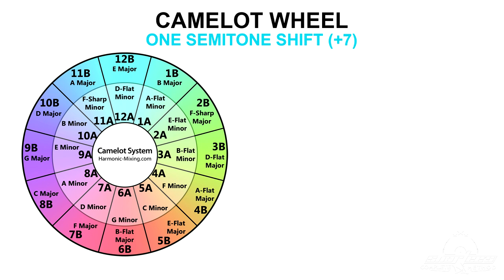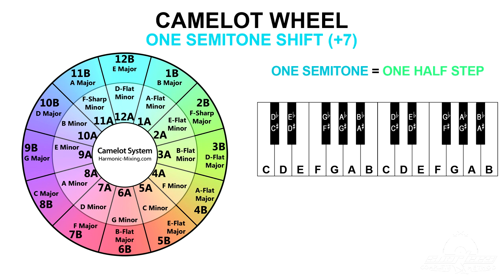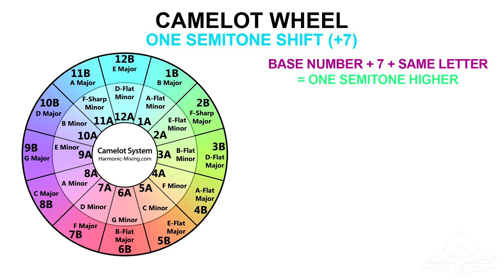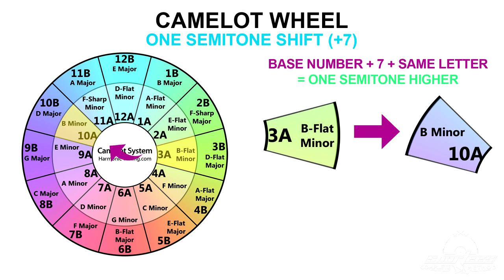Another way to create a gentle energy boost in your mix is to move around the wheel clockwise to what would represent one half step or semitone on the keyboard. The mathematical equation to achieve this using the Camelot wheel is pretty simple: just add 7 to your base number and stay in the same ring of the wheel with the same letter in the key codes. For example, you can try to go from 3A B-flat minor to 10A B minor — so 3 plus 7 equals 10, and you stay in the inner part of the wheel with the minor keys represented by the letter A, giving you 10A.